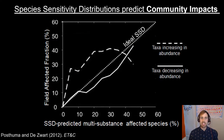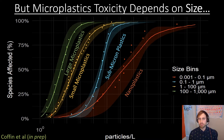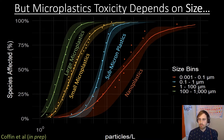Species sensitivity distributions are often used in ecotoxicological risk assessments to predict community-level impacts of a stressor. Unlike dissolved contaminants, microplastics differ in toxicities based on their size and other parameters. When building a species sensitivity distribution based on size groupings, the different distributions reflect these arbitrary size bins.